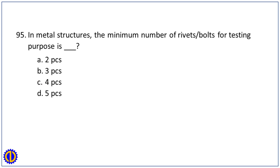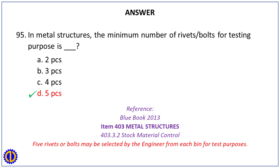Question 95. In metal structures, the minimum number of rivets or bolts for testing purposes is: A. 2 pieces. B. 3 pieces. C. 4 pieces. D. 5 pieces. Answer: D. 5 pieces. Reference: Blue Book 2013, Item 403 Metal Structures, 403.3.2 Stock Material Control — 5 rivets or bolts may be selected by the engineer from each bin for test purposes.